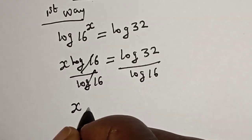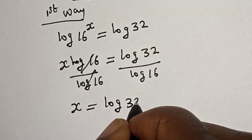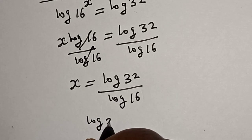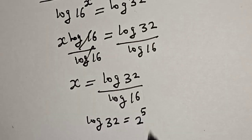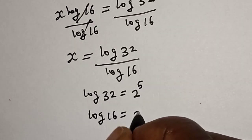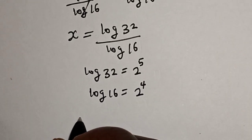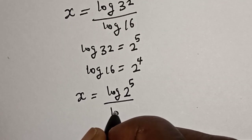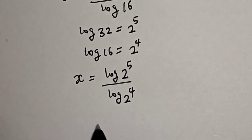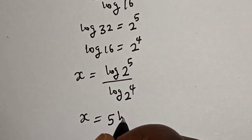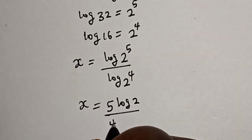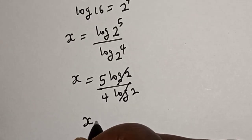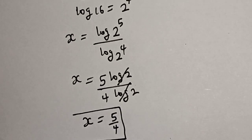We have s is equal to log 32 divided by log 16. Now, log 32 is log 2 raised to power 5, and log 16 is log 2 raised to power 4. Substituting, we get s is equal to 5 log 2 over 4 log 2. The log 2 terms cancel, giving us s is equal to 5 over 4 — that is our final answer.